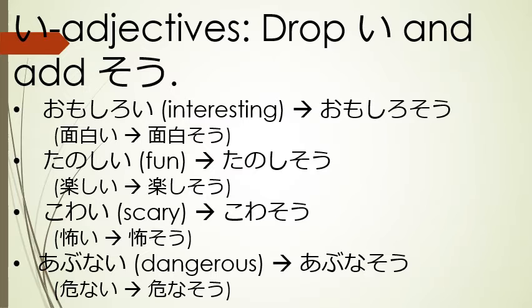This is pretty simple to do with i-adjectives. We just drop the final 'i' and add 'sou.' So 'omoshiroi,' meaning interesting, becomes 'omoshiro sou.' 'Tanoshii,' meaning fun, becomes 'tanoshisou.' 'Kowai,' meaning scary, becomes 'kowasou.' And 'abunai,' meaning dangerous, becomes 'abunasou.'